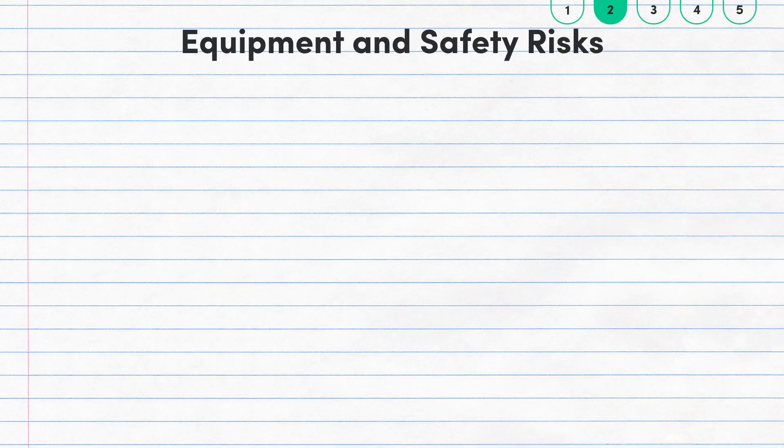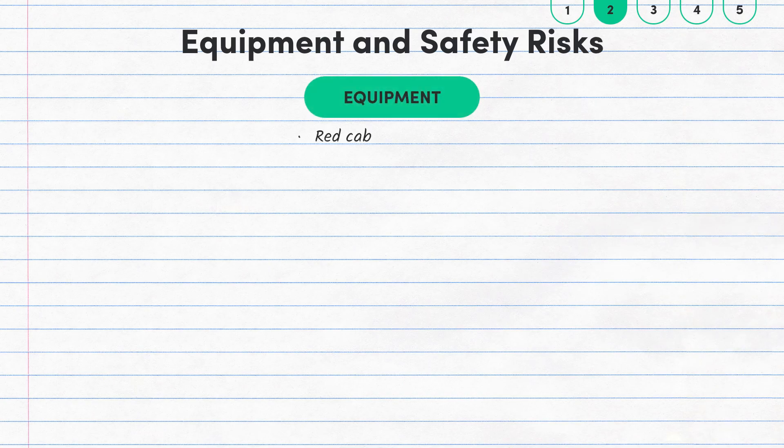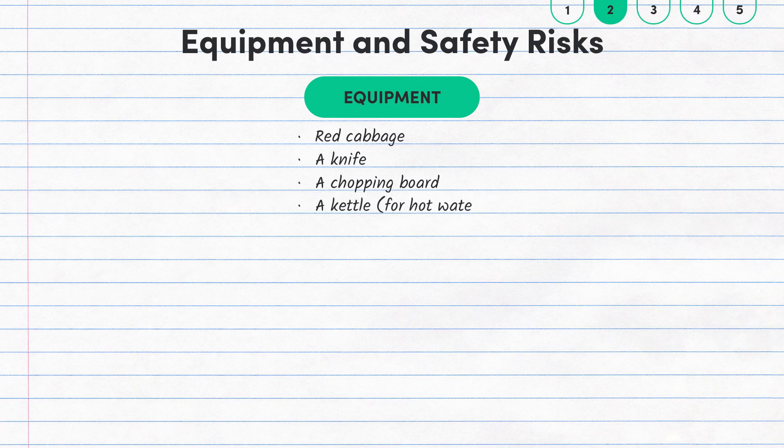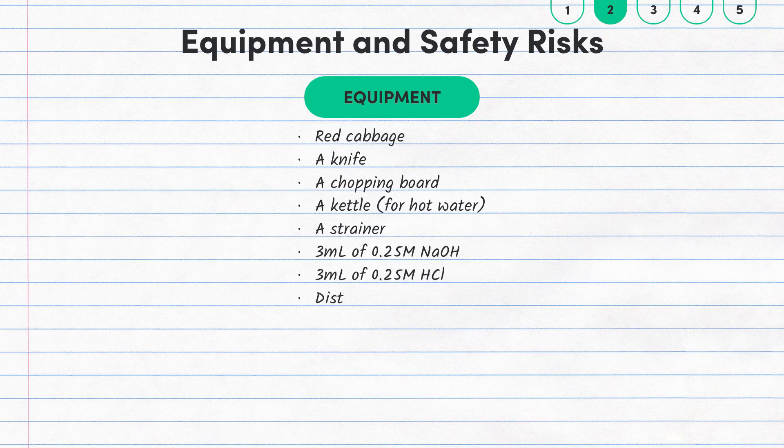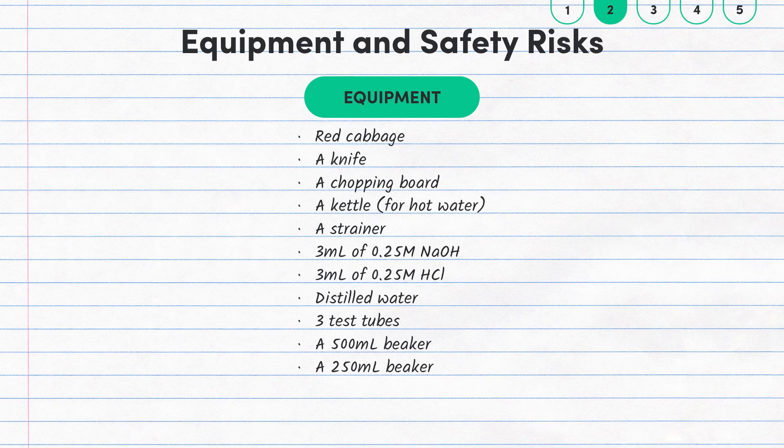Now, the equipment we're going to need for this experiment includes red cabbage, a knife, a chopping board, a kettle for hot water, a strainer, 3 millilitres of 0.25 mole sodium hydroxide, 3 millilitres of 0.25 mole hydrochloric acid, distilled water, three test tubes, a 500 milliliter beaker, a 250 milliliter beaker, a stirring rod and plastic pipettes.